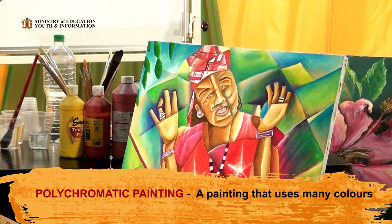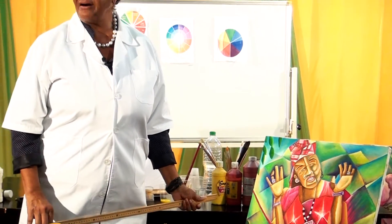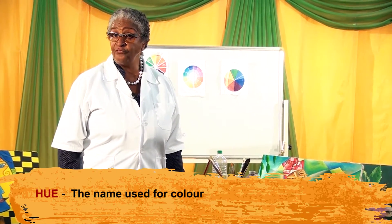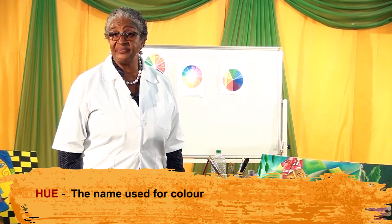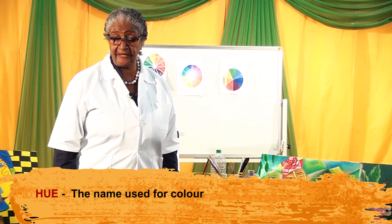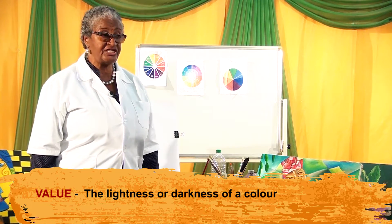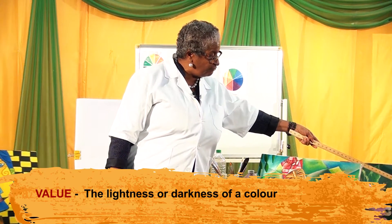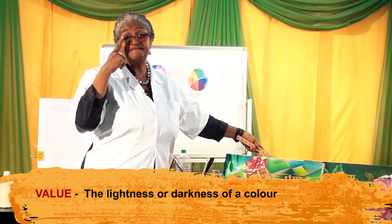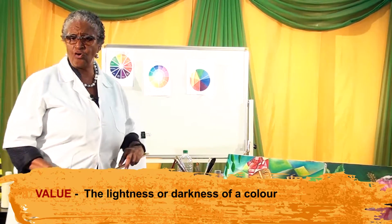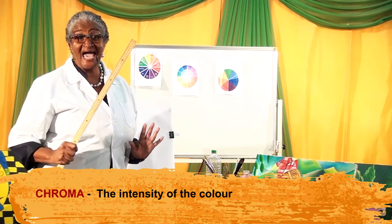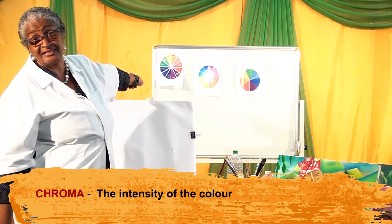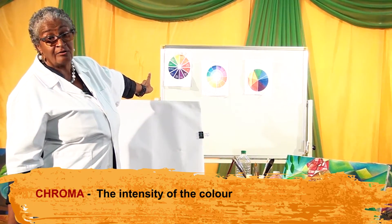Colors have three properties. First is hue — the scientific name for color. Then we have value, which is the lightness or darkness of a color, like how pink and red break down from light to dark. And then we have chroma — the true intensity or brilliance of a color. On the color wheel those are the saturated, chromatic points of color.